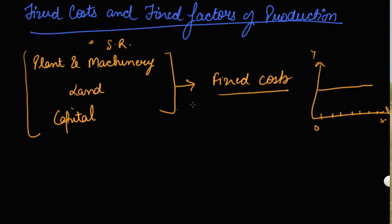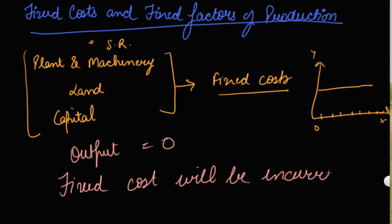Your fixed costs are incurred even when your output is zero. Even if you do not have any output, your fixed cost will be incurred. There is no point where you can eliminate your fixed costs from the cost of production.